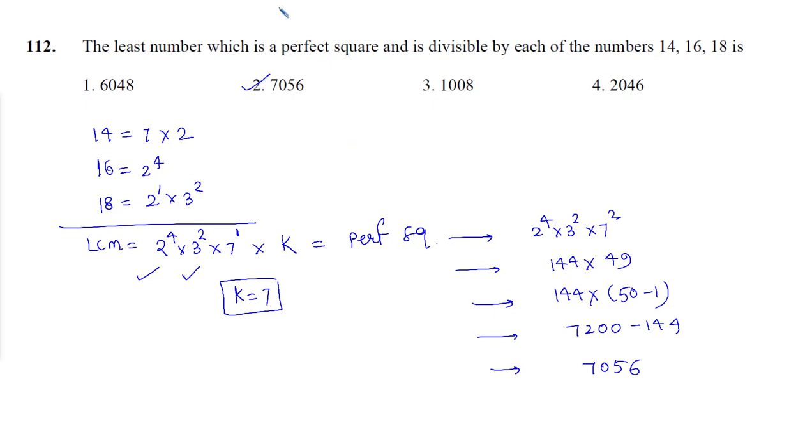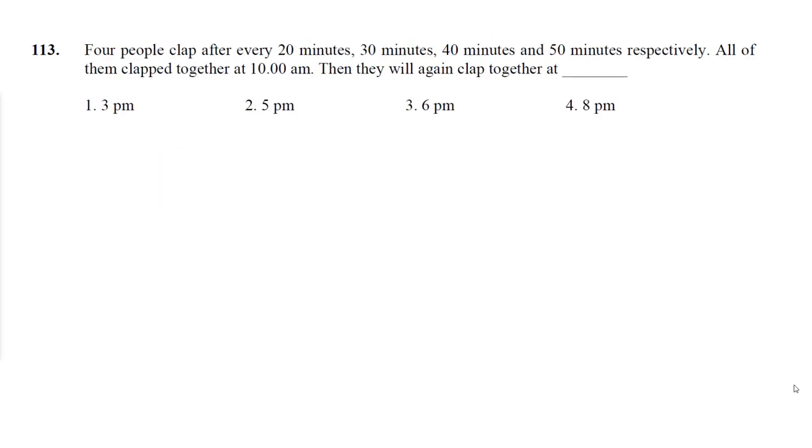Let's have a look at question number 113. Four people clap after every 20 minutes, 30 minutes, 40 minutes and 50 minutes respectively. All of them clapped together at 10 am, then they will again clap together at one time. So we want all four people to clap together. First time they clapped together at 10 am. After that everyone is having different interval of clapping. First person after every 20 minutes, second person after every 30 minutes, third person after every 40 minutes and fourth person after every 50 minutes. We want all of them to come together.